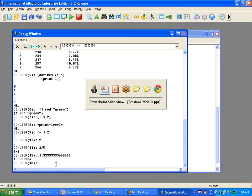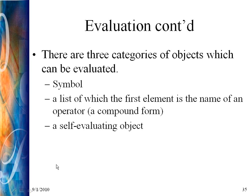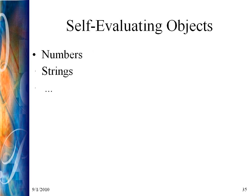Self-evaluating objects are numbers, strings, and in fact everything else — every object in LISP self-evaluates except for symbols (which evaluate to their value as a variable) and lists (where the first element is taken to be the name of an operator and remaining elements specify arguments). It's not very interesting to evaluate numbers because you know what they are. What's interesting in LISP is to evaluate function calls because that's what actually does some work, and a function call is represented as a list.